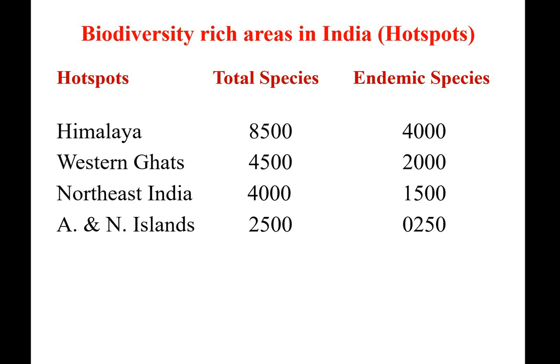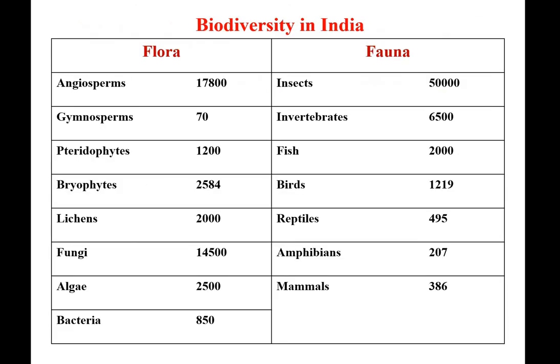In India's biodiversity-rich areas: the Himalaya contains 8,500 total species of which 400 are endemic. From Western Ghats, 4,500 total species and 2,000 are endemic. From Northeast India, out of 4,000 species, 1,500 are endemic. From Andaman and Nicobar Islands, out of 2,500 species, 250 are endemic — that is, species restricted to that particular region and not found elsewhere.